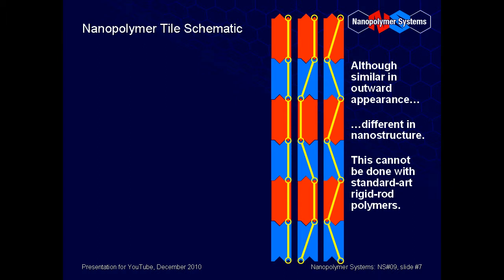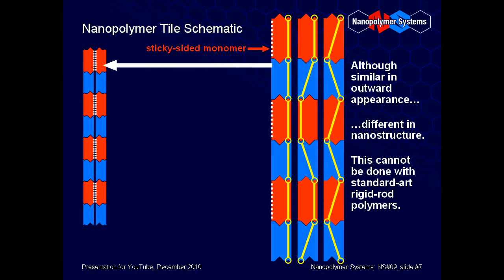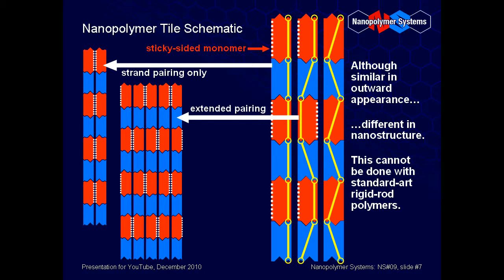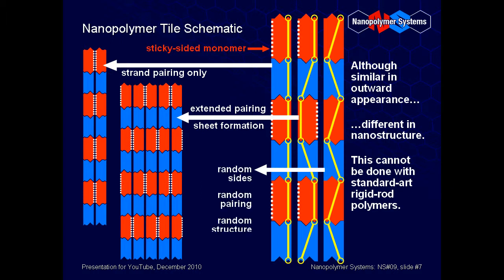The practical use of such differences can be simply illustrated by the attachment of a pendant group to the left side of the male monomer, which we will thematically describe as sticky. With the first rod polymer, the sticky surfaces are all on one side of each strand, so strand pairing results. With the second rod polymer, the sticky surface alternates sides, so extended sheets of parallel strands are formed. With the third rod polymer, the sticky edges are randomly positioned and no specific nanostructures result.